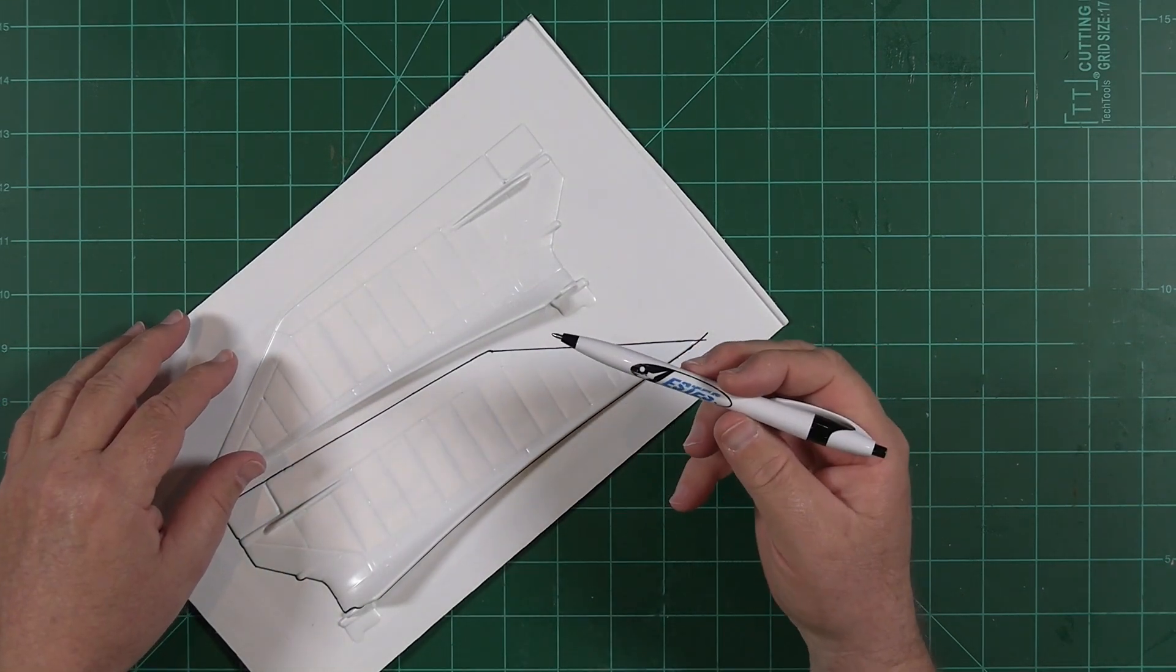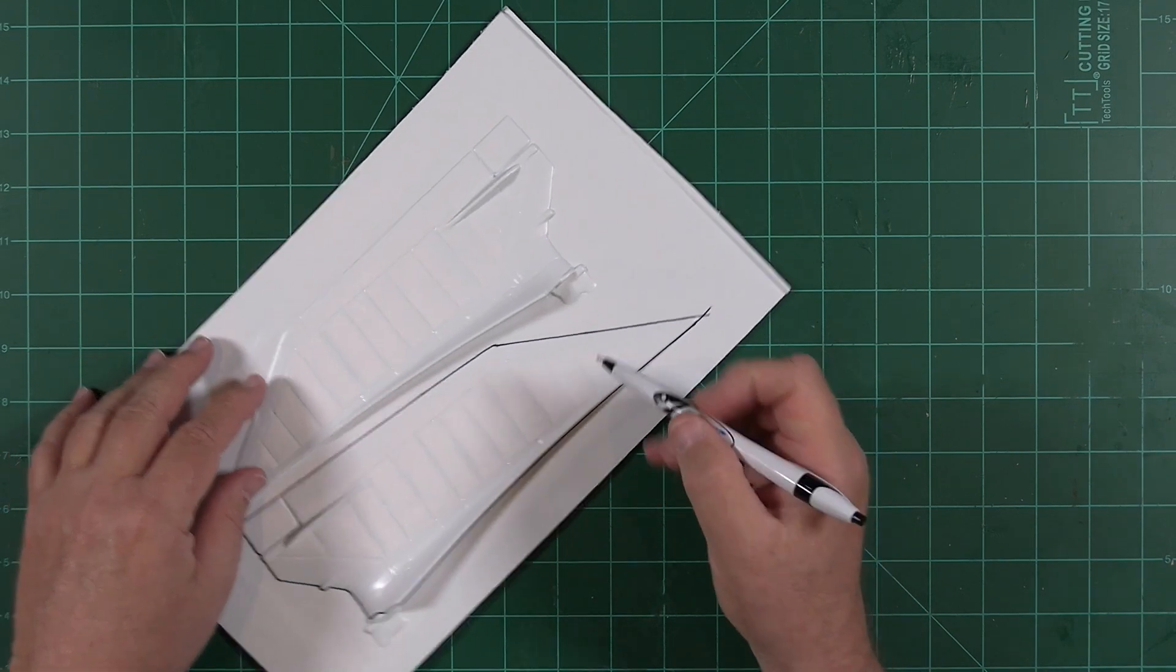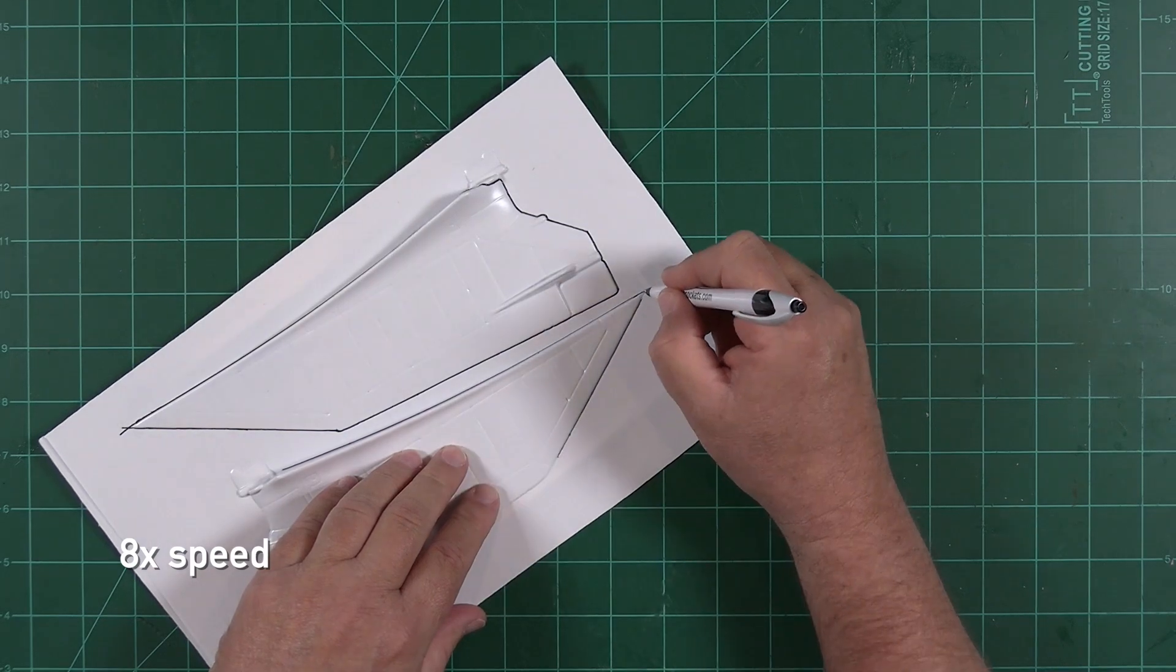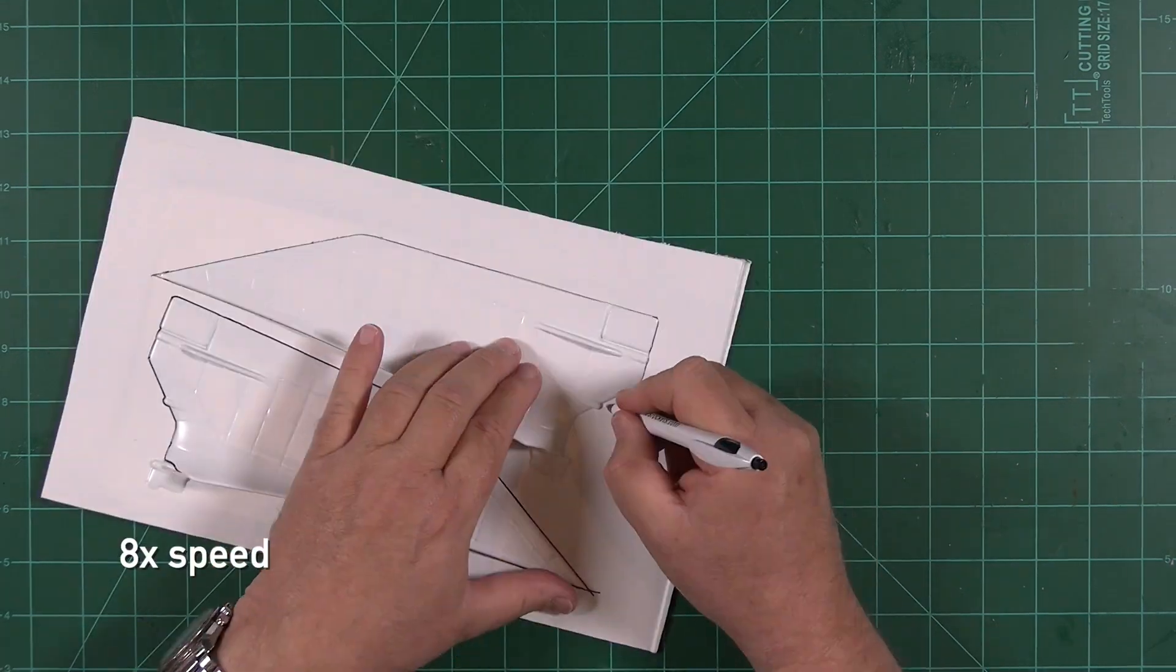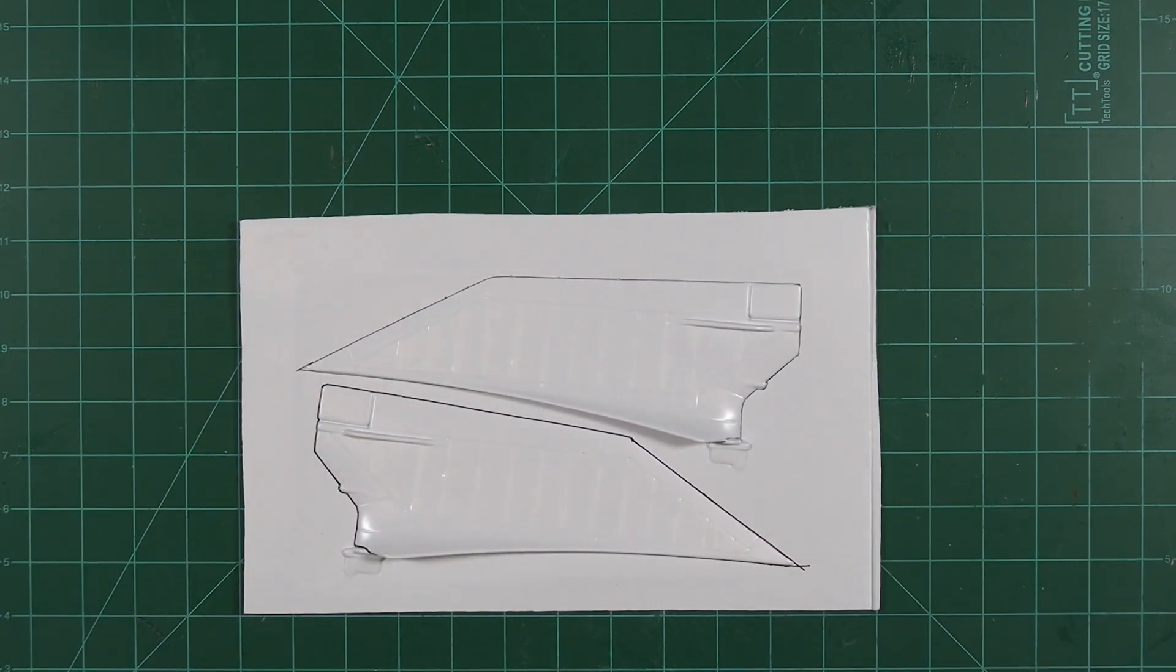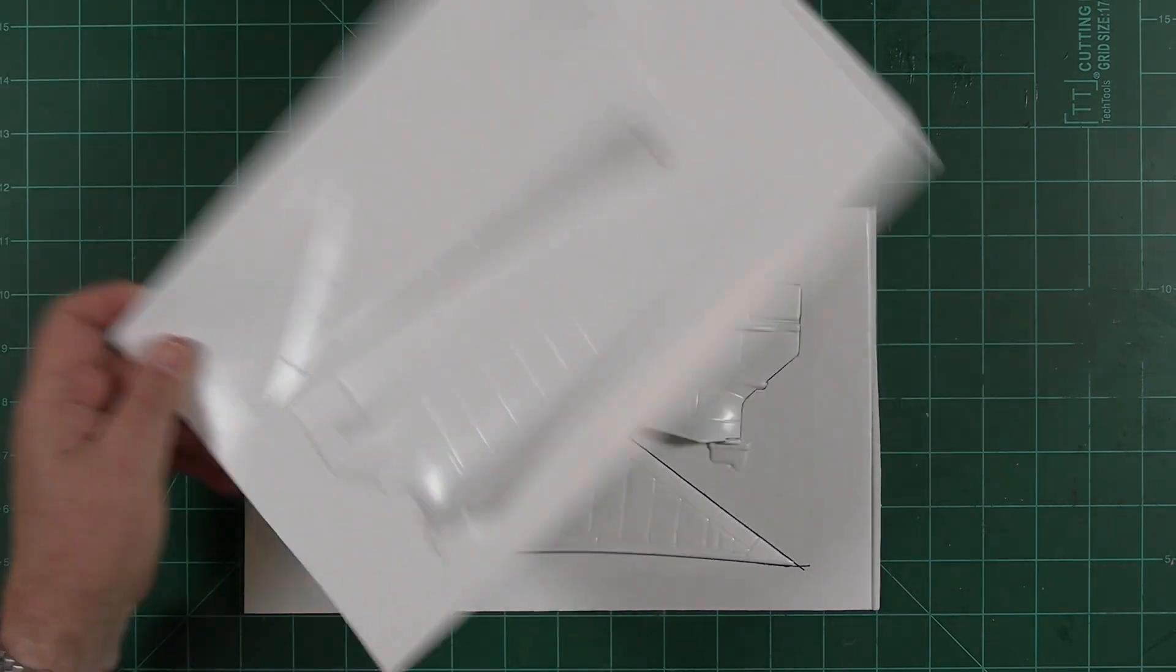You can also use a standard ballpoint pen. By the way, Ellis, Bill, I need a new Estes ballpoint pen. Okay, we've got the fins marked and ready to cut. You'll need to repeat this four times for the other three fins in the set.